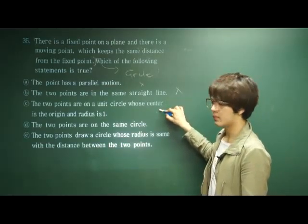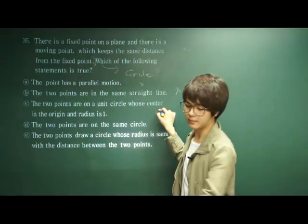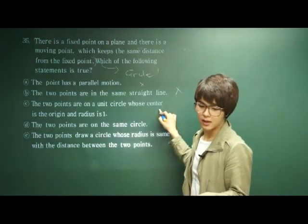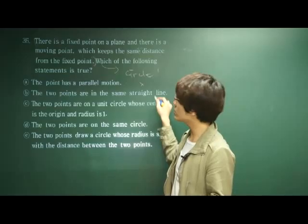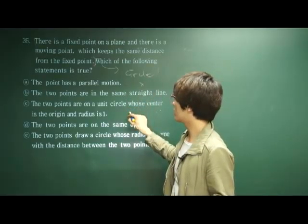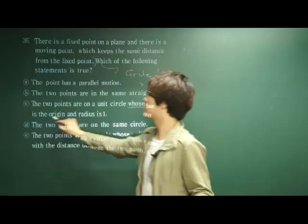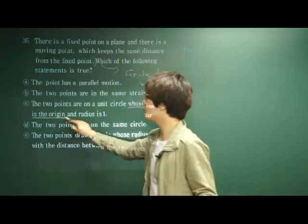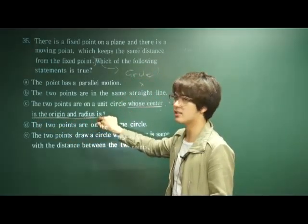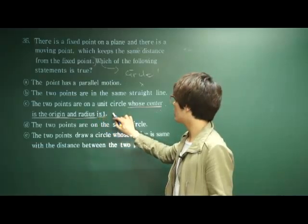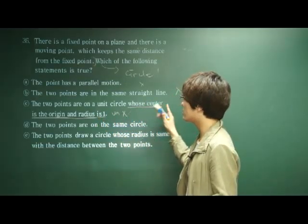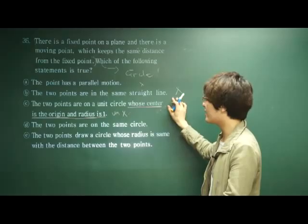C could be correct — it can be. Why? Because this was the very definition of the circle, but we don't know this part: that the center is the origin and the radius is equal to one. This is unverified, so let's leave it there.